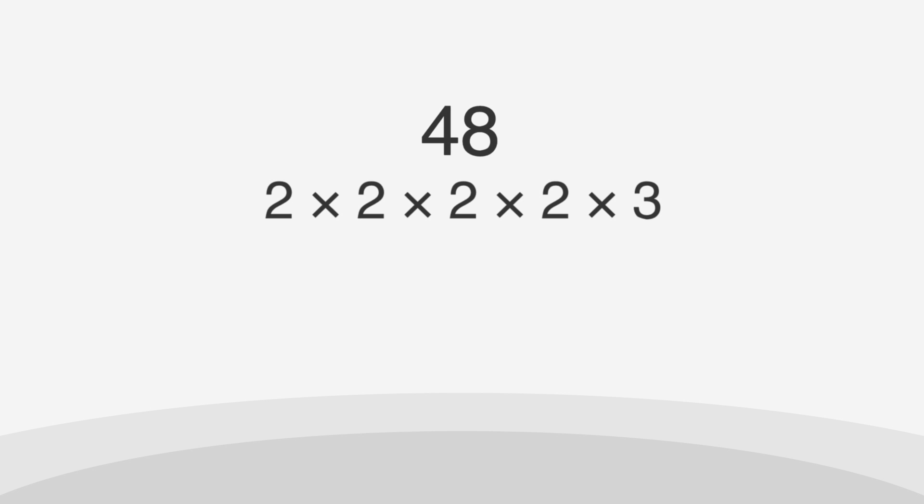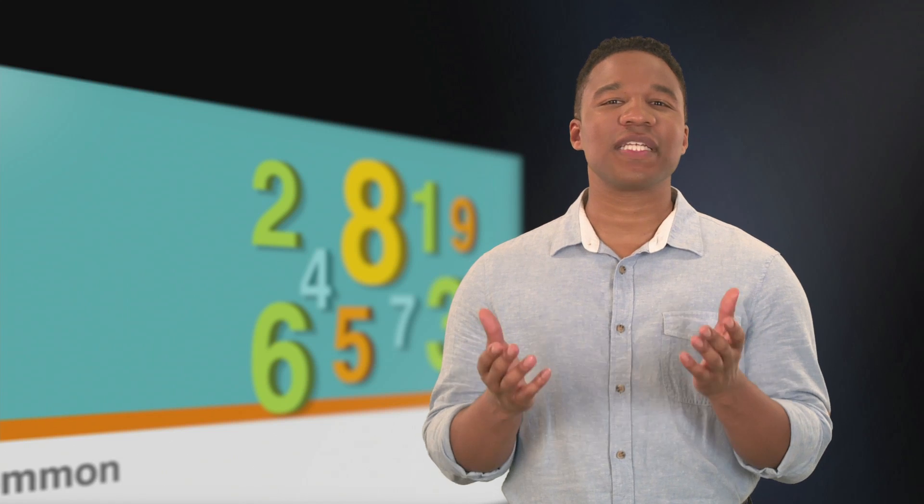Let's look at the number 48. The prime factors of the least common multiple can be used to create any of the numbers that share that multiple. Sometimes it's easy enough to list out the first few multiples of the numbers and notice one in common. On the GRE, you may be asked to simply find the least common multiple of several numbers. Let's check out an example GRE problem.